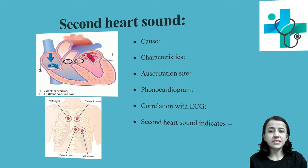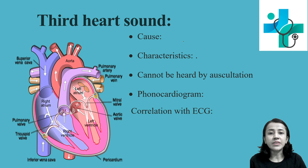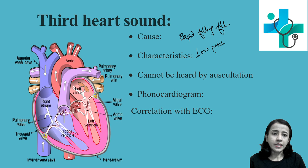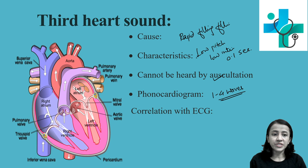The third heart sound cannot be easily heard with a stethoscope. It is caused by the sudden rush of blood during the rapid filling phase of the ventricle. It is low pitch and low intensity, with a duration of 0.1 seconds. On the phonocardiogram, you can find a group of 1 to 4 waves. It correlates with the interval between the T wave and the P wave of the ECG.